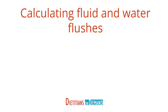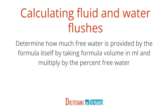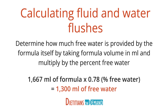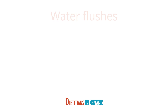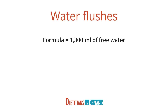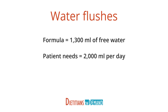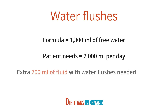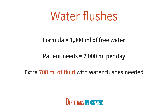Next we need to calculate how much fluid we need to provide in water flushes. First determine how much free water is provided by the formula itself. Take the formula volume in milliliters and multiply by the percent of free water: 1,667 milliliters times 78 percent free water equals 1,300 milliliters of free water. But our patient needs 2,000 milliliters of fluid per day, which means we need to give an extra 700 milliliters of fluid with our water flushes.